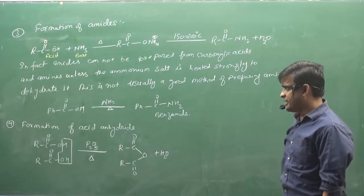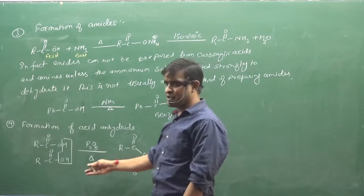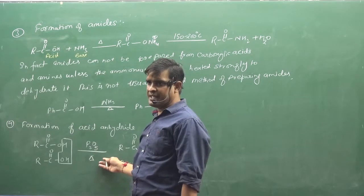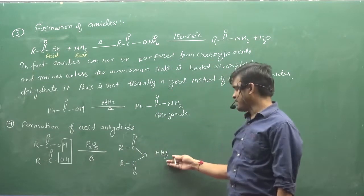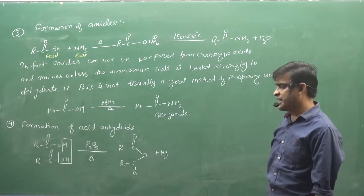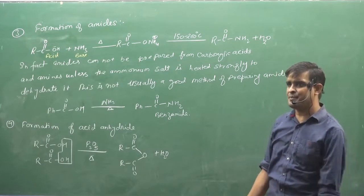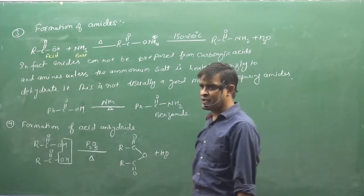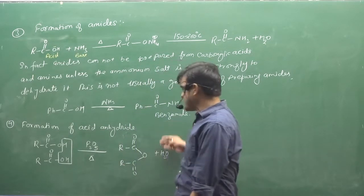Now, one reaction is formation of acid anhydride. If you have any acid, carboxylic acid, P2O5 or dehydrating agent, then you will warm it. Then you will get H2O and you will get acid anhydride. So you can use, no doubt, P2O5 and aluminum oxide, both are dehydrating agents.